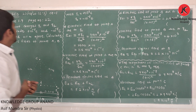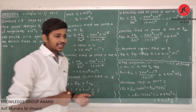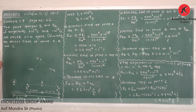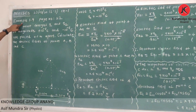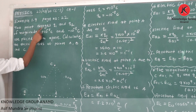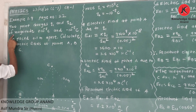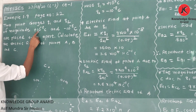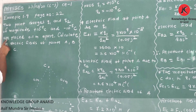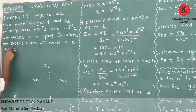Okay students, lecture 3. One example based on superposition of electric field. See example 1.9 on page number 22. The question: two point charges q1 and q2 of magnitude plus 10 raised to minus 8 coulomb and minus 10 raised to minus 8 coulomb are placed 0.1 meter apart. Calculate the electric field at points A, B, and C. See figure.